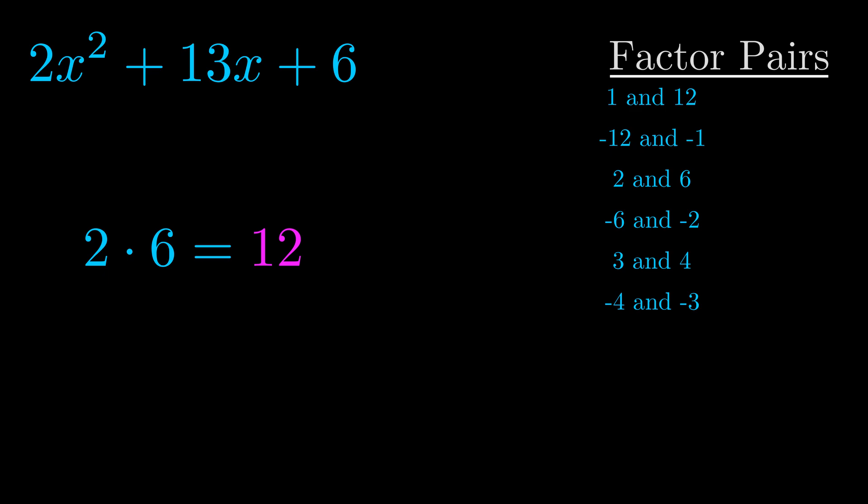The b value is the coefficient on the x term. That's the middle term, the one that we haven't done anything with yet. And really this is the only factor pair that we need.